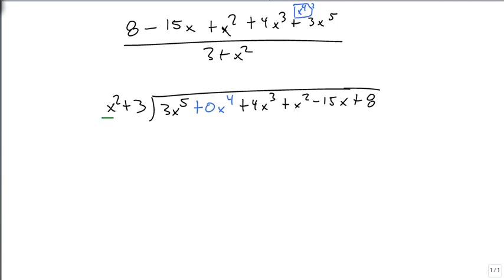And then we just go through like normal. Well, x squared goes into 3x to the 5th, 3x cubed times, which gives me 3x to the 5th plus 9x cubed. Notice we skipped the x to the 4th. So when we subtract, we get minus 5x cubed. Now, I would bring down the x to the 4th. But since it's a 0, I don't need to worry about it. So I'm going to skip it.